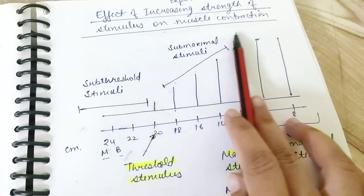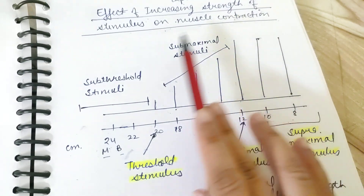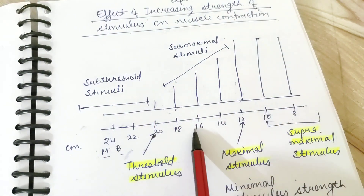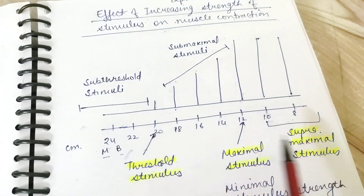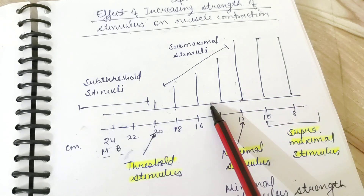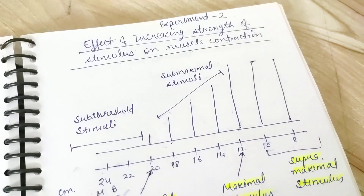So the key points about increasing strength of stimulus on muscle contraction: you should know all the definitions, the observation, and the physiology — which is the concept of motor unit recruitment. I hope this is clear. Next, we'll be talking about the next experiment. Thank you so much, happy learning, bye-bye.